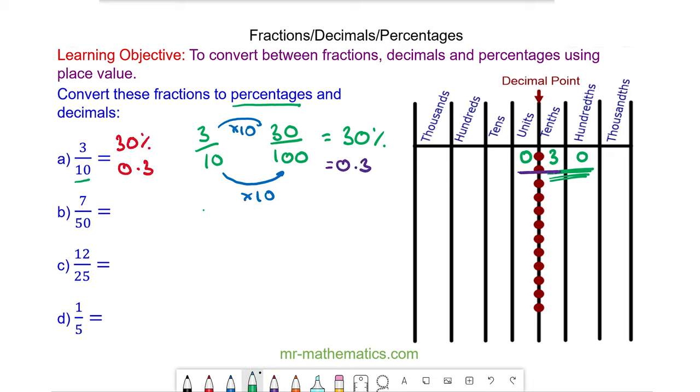The fraction 7/50. The problem we have here is that our place value table doesn't work with 50ths. So we need to write it as a fraction which appears in our place value table, which is hundredths. We need to write 7/50 over 100, and to do this we can multiply the numerator and denominator by 2, because 50 times 2 makes 100, and 7 times 2 is 14.